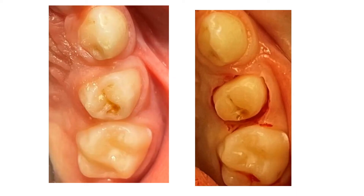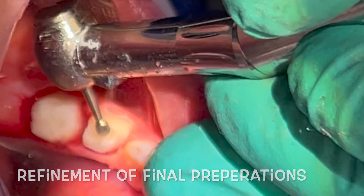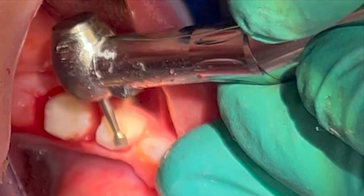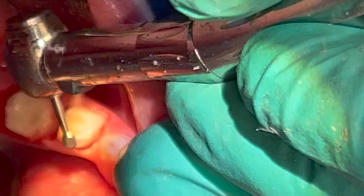Here is an example of a final prep on tooth I as in Indigo. You can appreciate the cylindrical appearance of the final preparation — it is not a base pyramid or a trapezoid, and the crown should easily and passively fit on and off. This step is showing the refinement of the final preparations. We have two cylindrical preps and are just going over any sharp angles or excessive occlusal areas.